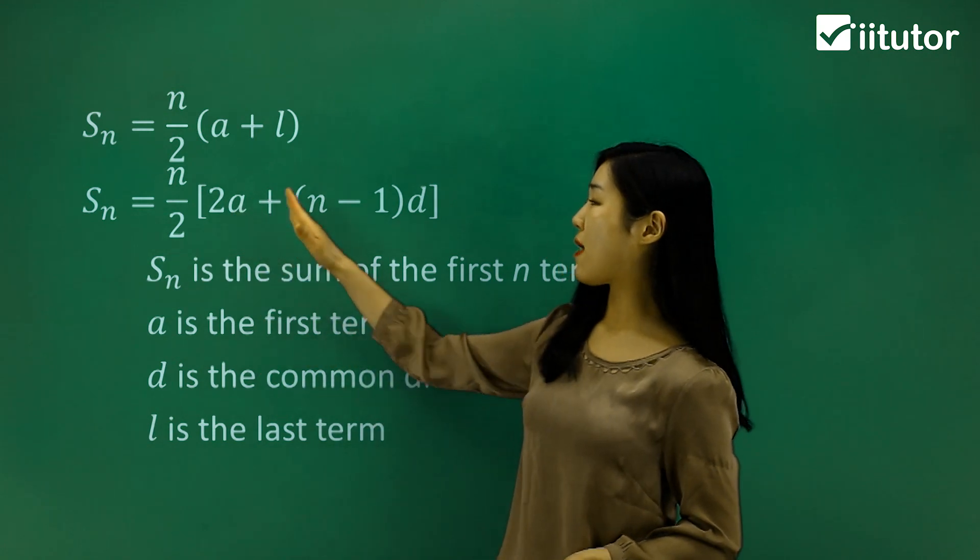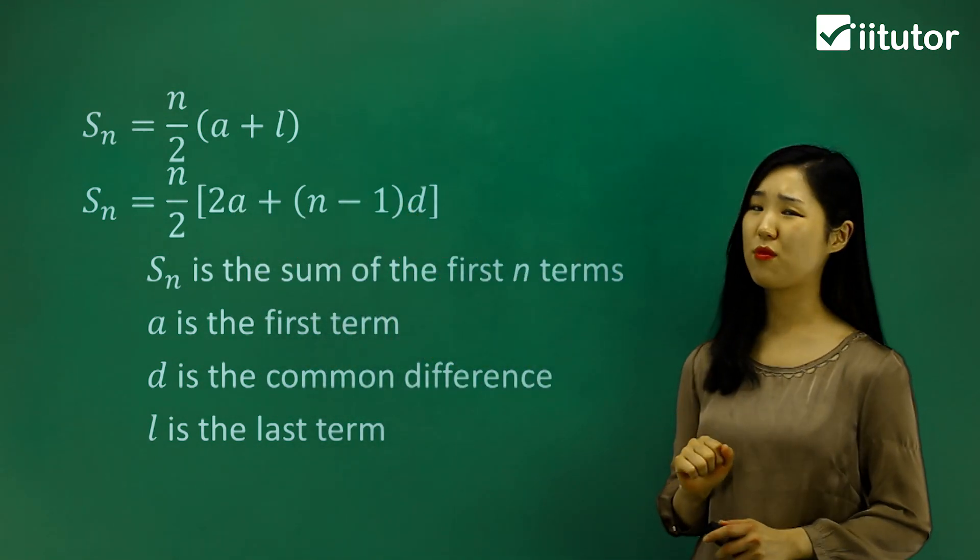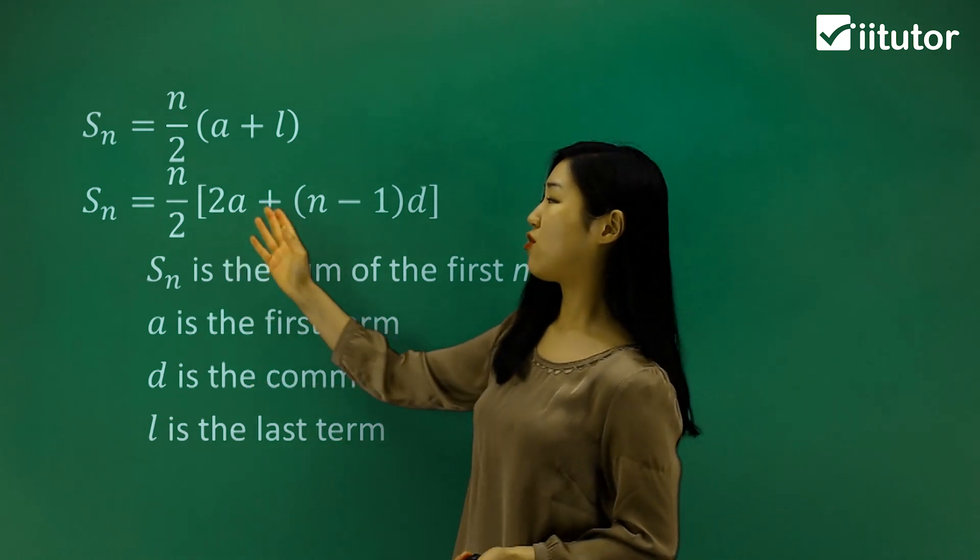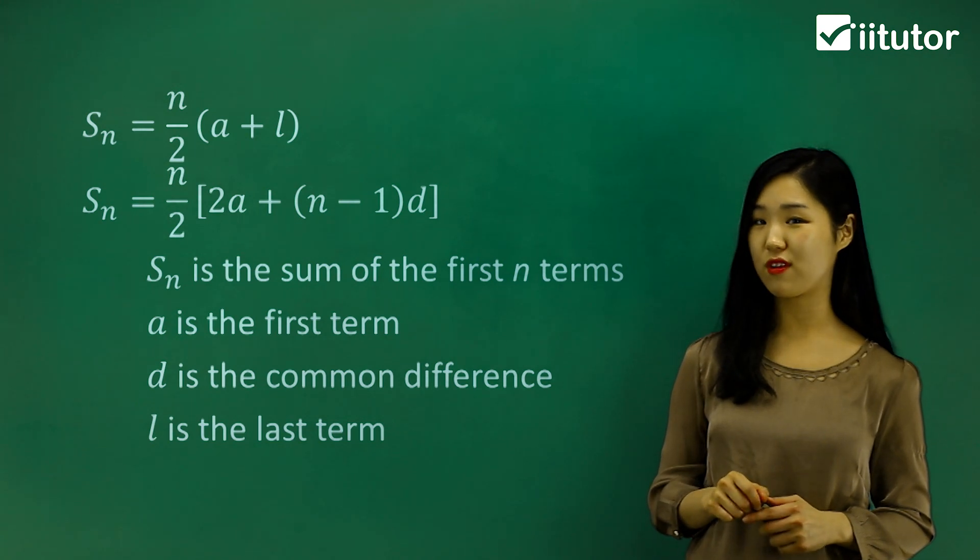But otherwise, if you've got your first term and d, which is the common difference, you'd have to use the second formula, which is a little bit bigger: n over 2, 2a plus n minus 1d. So make sure you pick which one would be more appropriate for a different scenario.